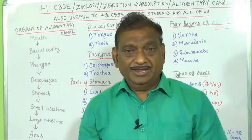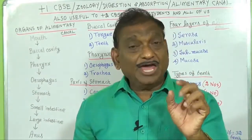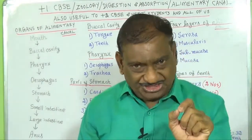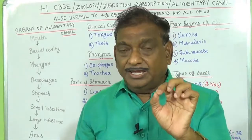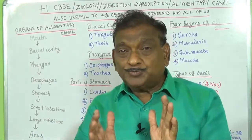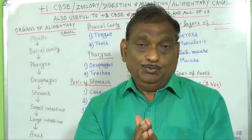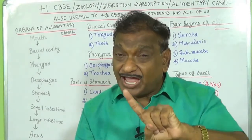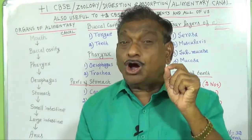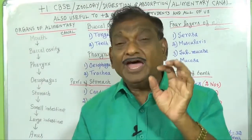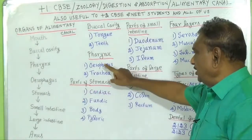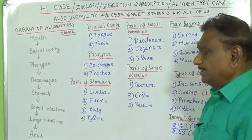In the buccal cavity there are 2 organs: one is tongue, another is teeth. In the case of pharynx, 2 pipes open into it: one is the food pipe and the other is the wind pipe. We know that the food pipe is called esophagus and the wind pipe is called trachea. Pharynx: 1. esophagus, 2. trachea.